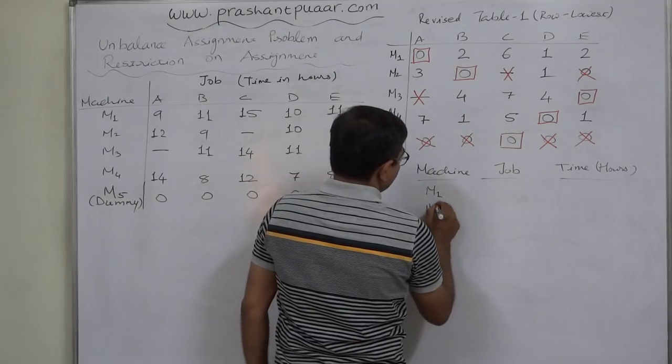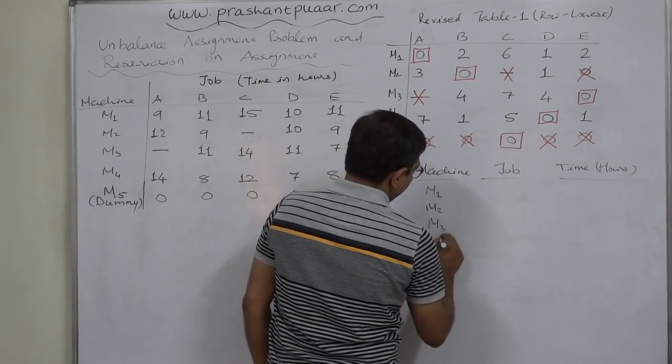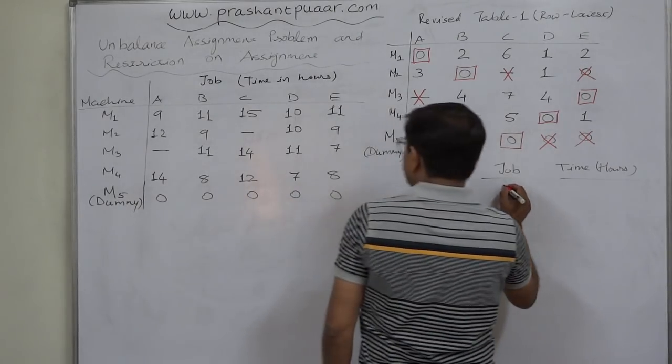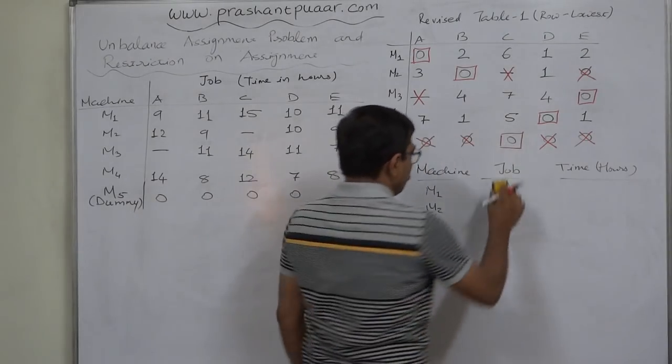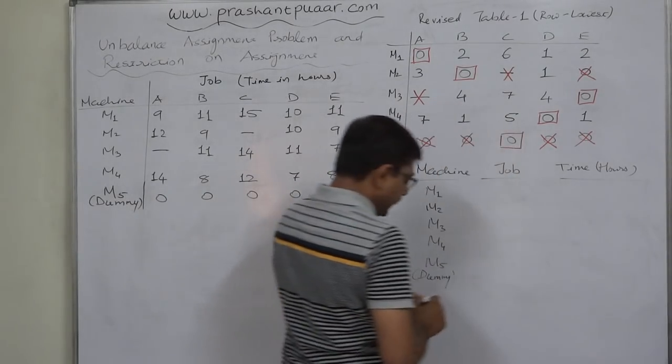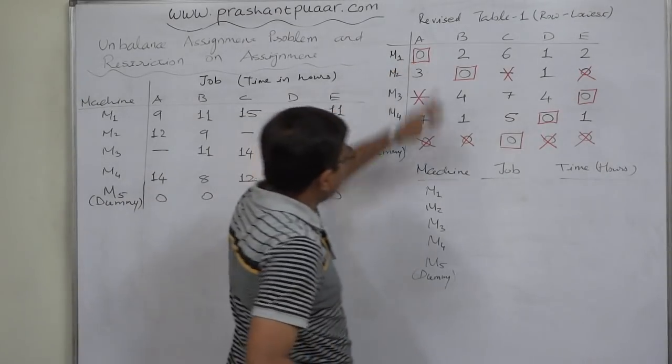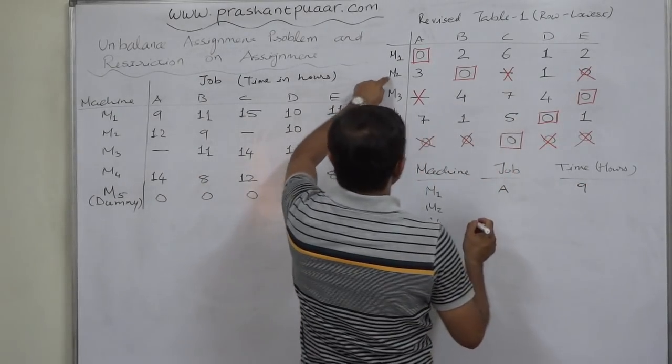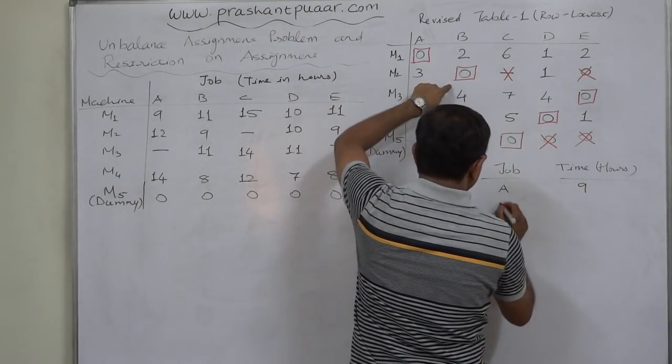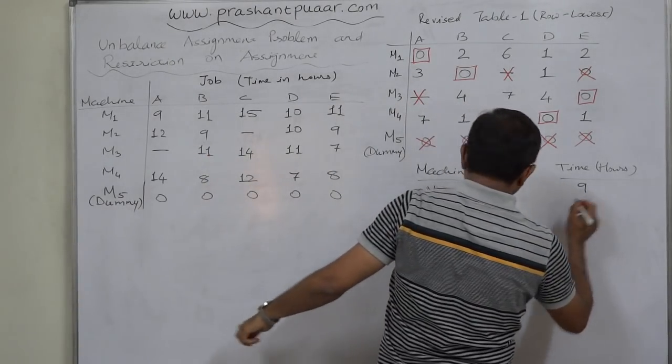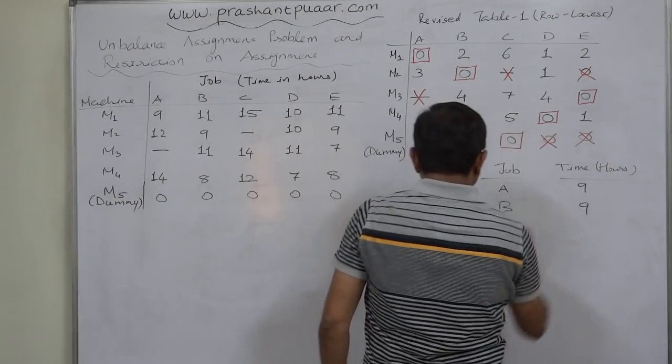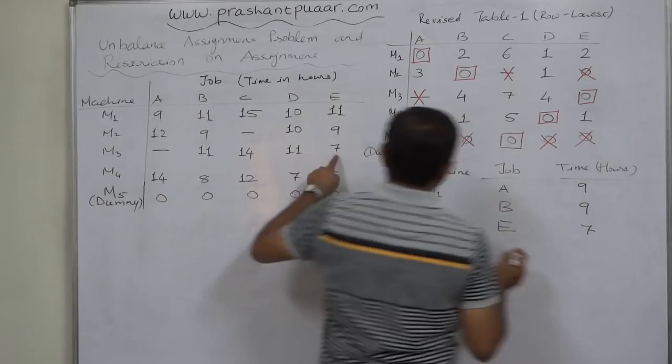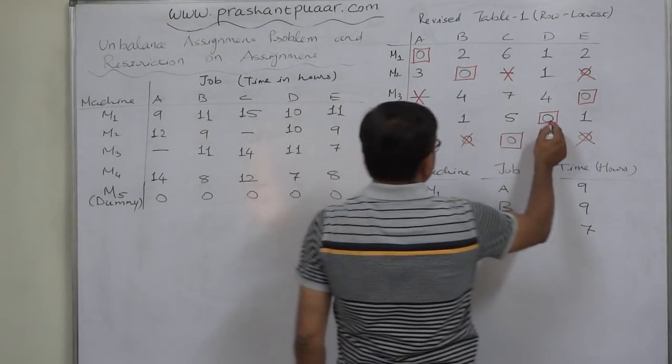Machine M1, M2, M3, M4 they are real machines. M5 is dummy. Job. Machine 1 is assigned job A. Total time is 9 hours. Machine 2 is assigned job B. Total time is 9 hours again. Machine 3 is assigned job E. Total time is 7.